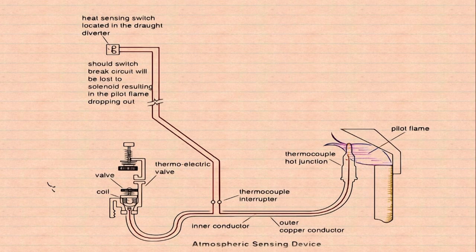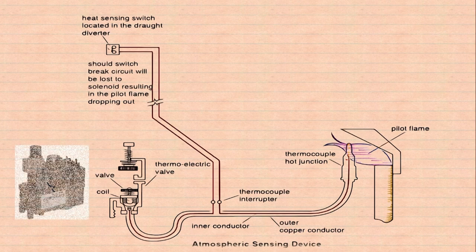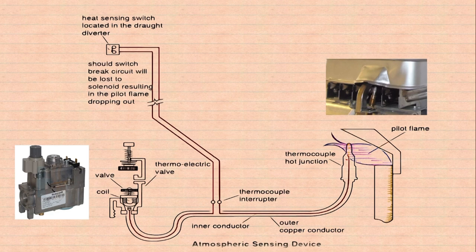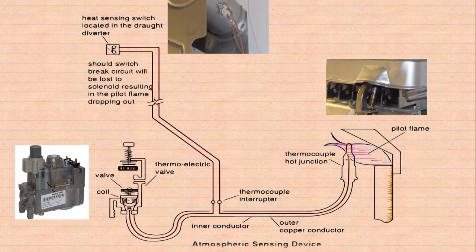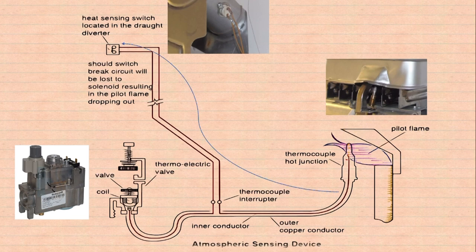So here is a picture of a typical system. It involves a gas valve, your FSD, in this case a thermocouple FSD, and at the top there, the TTB.